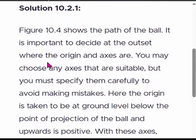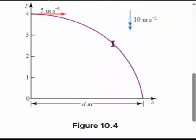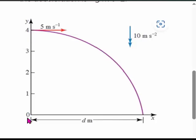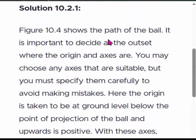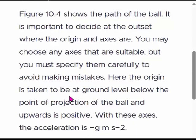Let's see the solution. We can visualize it in figure 10.4. The window is 4 meters above the ground and the ball is thrown at 5 meters per second speed, then lands on the ground after traveling 4 meters vertically. The distance traveled from the building is d meters. The acceleration due to gravity is 10 ms⁻² and the horizontal velocity is 5 meters per second. The origin is taken to be at ground level below the point of projection and upward is positive. With this axis, the acceleration is negative g meters per second squared.